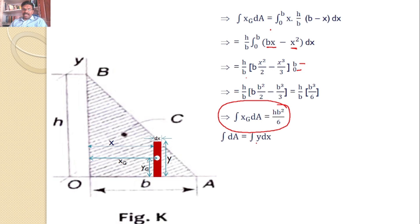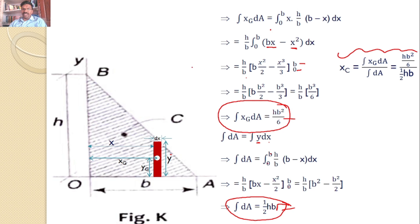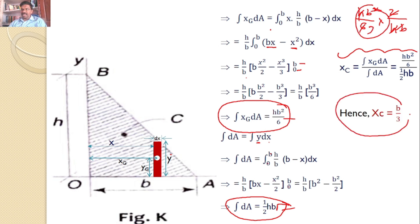Now I will calculate integral dA. Integral dA equals Y into DX, where Y is a function of X. So integral dA equals integral from 0 to B of H/B into (B minus X) DX. Taking H/B outside and integrating gives [BX minus X²/2] from 0 to B, which gives integral dA equal to half H into B. So XC equals (HB²/6) divided by (HB/2). Simplifying: HB²/6 times 2/(HB) — H cancels, B cancels — giving XC equals B/3. This is the X coordinate of the centroid of the right angle triangle OAB.